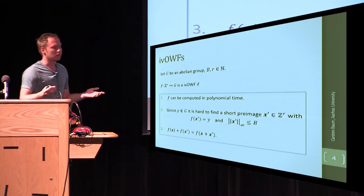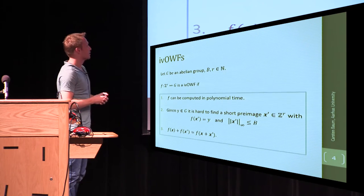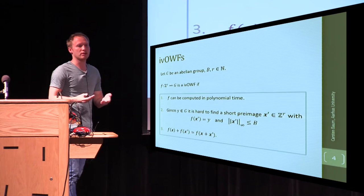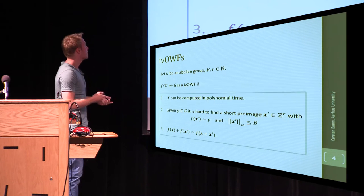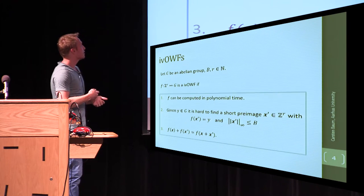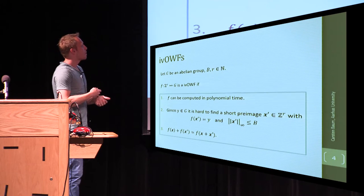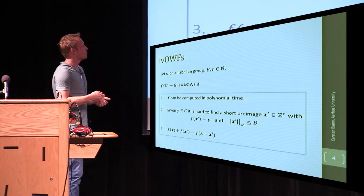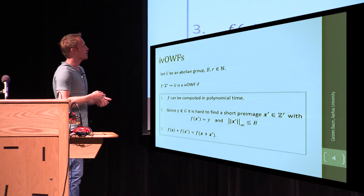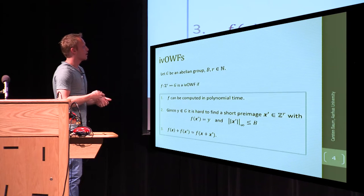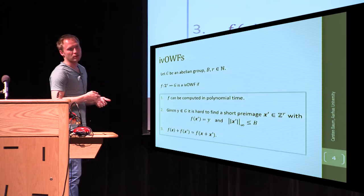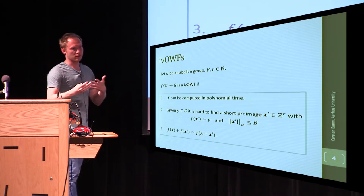Then such a map is called a homomorphic one-way function over the integers if, well first of all, if it is a one-way function. So we assume that evaluating the function can be done in polynomial time. But if I give you an element from this abelian group G and you want to find a pre-image, then it is very hard to find one, assuming that it's supposed to be short. This is where the shortness comes into play.